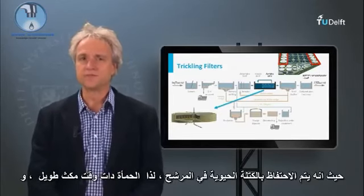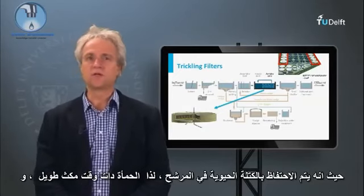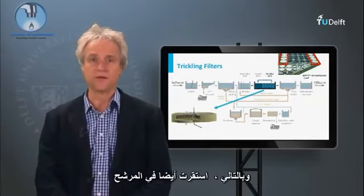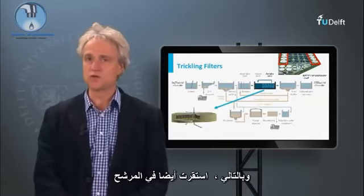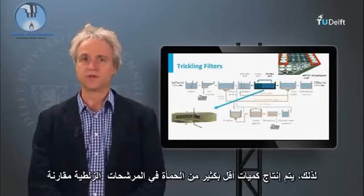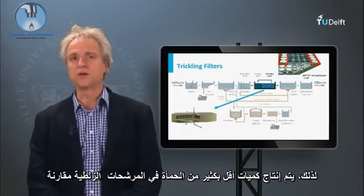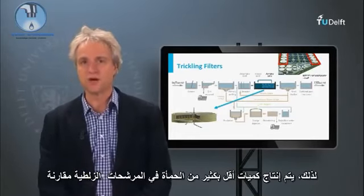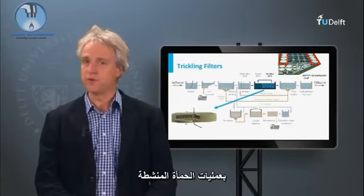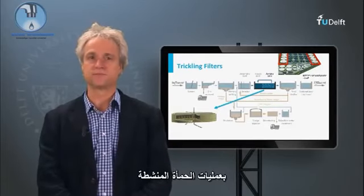Since the biomass is retained in the filter, the sludge has a long residence time and thus is also stabilized in the filter. Therefore, much lower quantities of sludge are being produced in trickling filters compared to activated sludge processes.